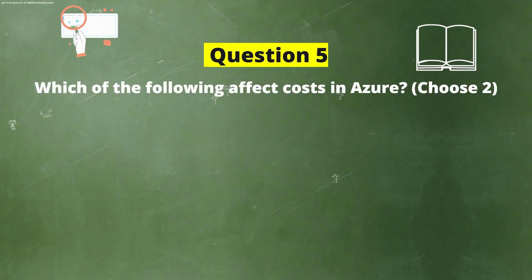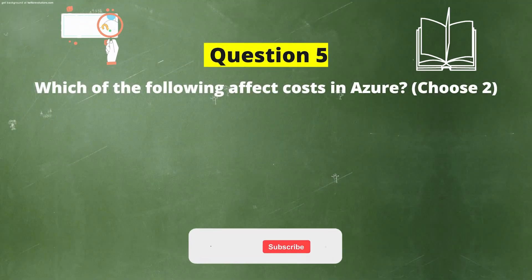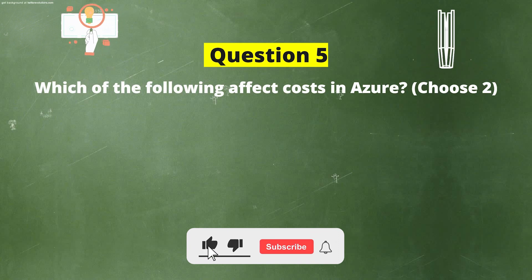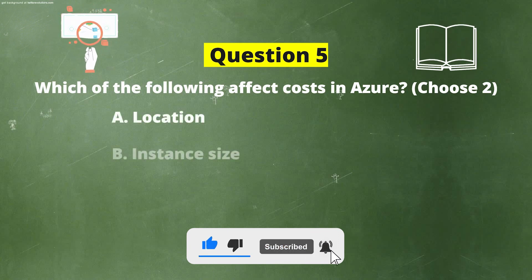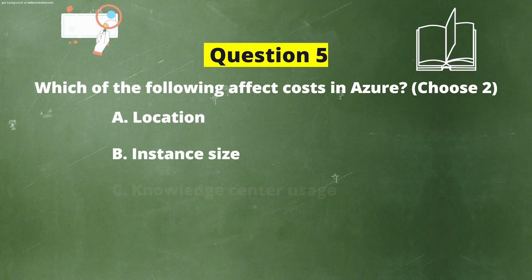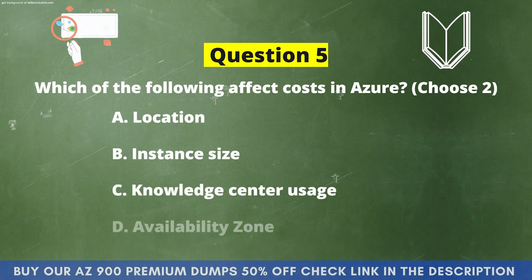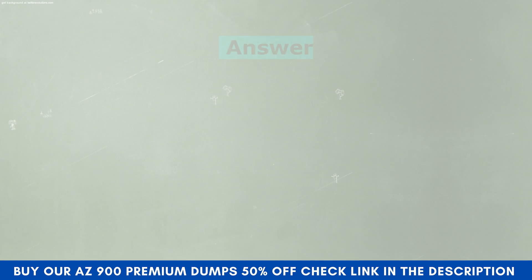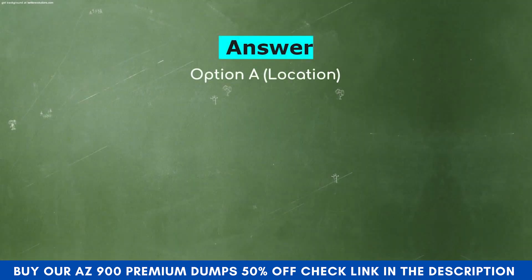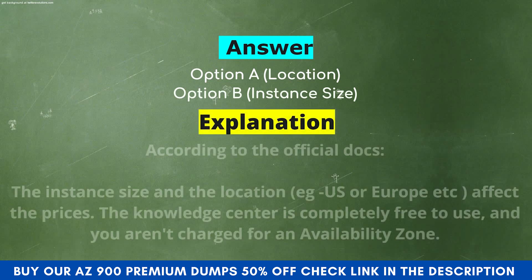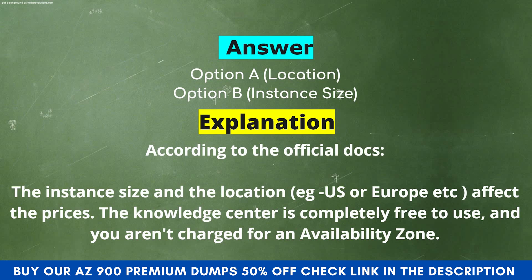Next question. Which of the following affect costs in Azure? Choose two options. Option A: Location. Option B: Instance Size. Option C: Knowledge Center Uses. Option D: Availability Zone. The correct answers are Option A — Location, and Option B — Instance Size. According to the official docs, instance size and location (e.g., US or Europe) affect prices. The Knowledge Center is completely free to use, and you are not charged for an availability zone.